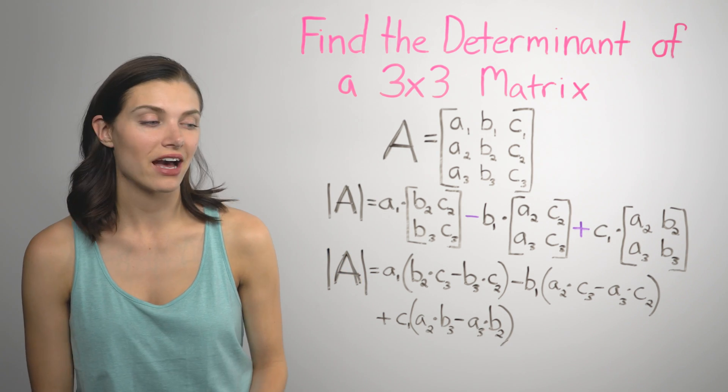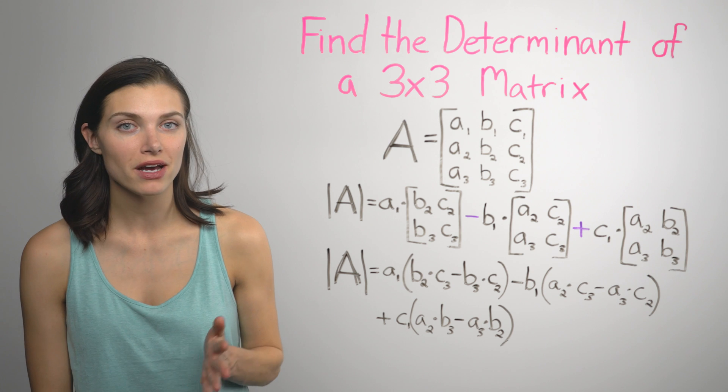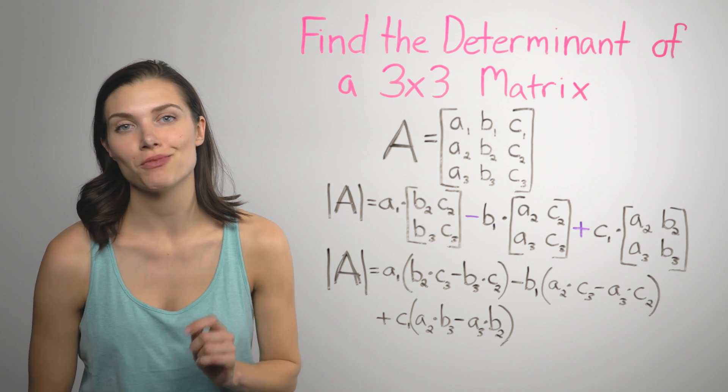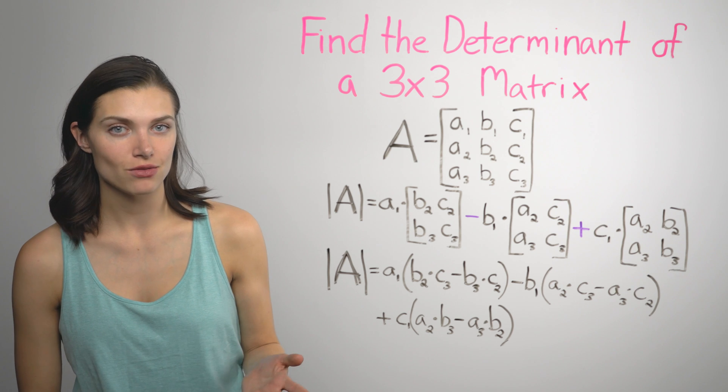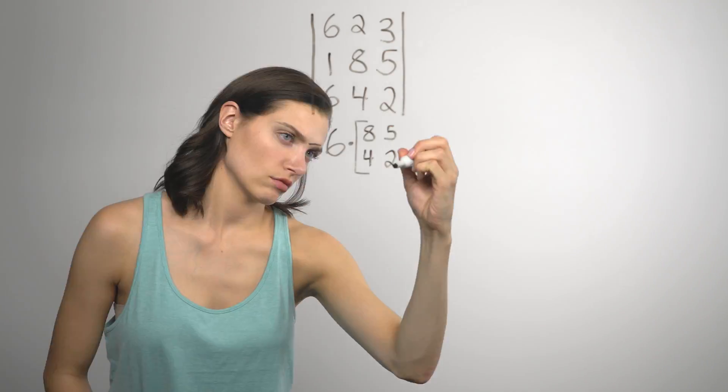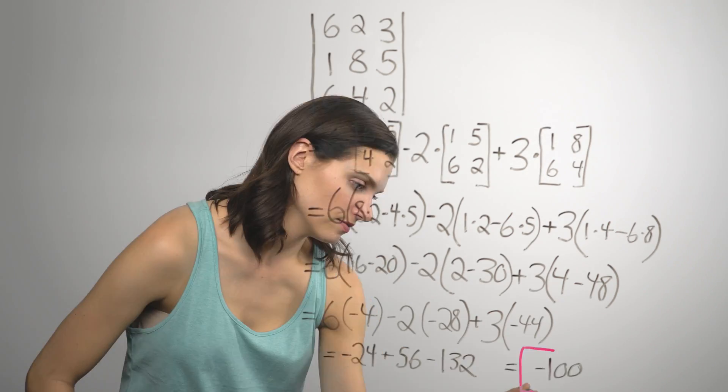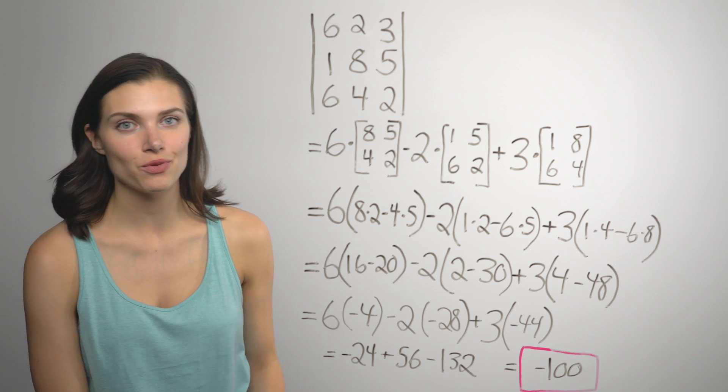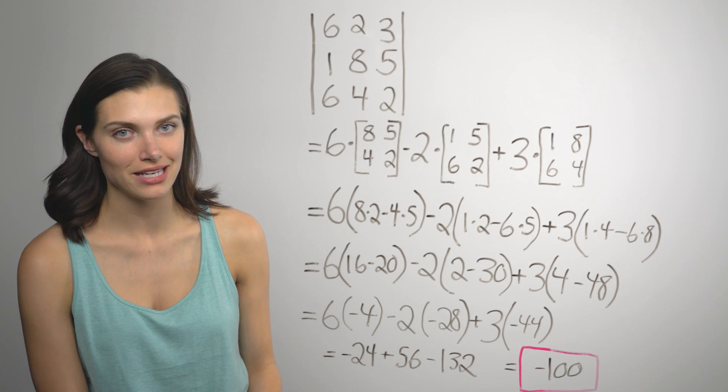So this equation calculates the determinant of a 3x3 matrix. You don't have to memorize it. Just remember the patterns. So if we did this with numbers, this is what it would look like. That's a lot of work, I know. But you can see with a real one how it all boils down to a single number.